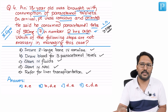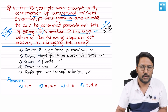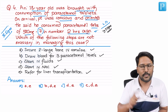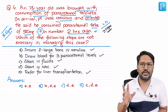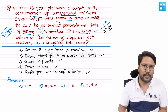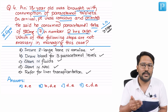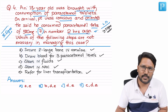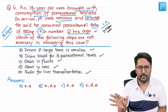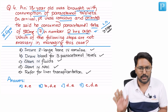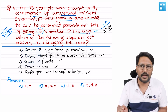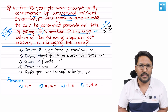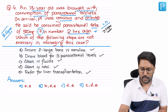You have an 18-year-old in the emergency room who consumed 3.5 grams of paracetamol two hours back. He is conscious and oriented, so there is no hepatic encephalopathy right now. Paracetamol will not immediately cause hepatic encephalopathy — it takes time. Hemodynamically, since hypotension is not mentioned, we assume he is stable.